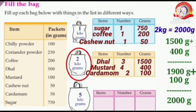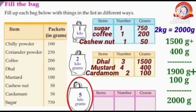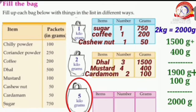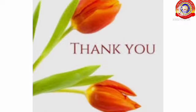So we filled the two kilogram bag with 1500 grams of dhal, 400 grams of mustard, and 100 grams of cardamom. You should try to fill this bag in another way. Similarly, you should fill a 5 kilogram bag with things from the table. I hope you all understood today's class very well. Thank you.